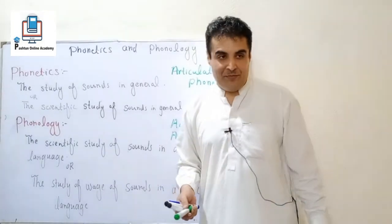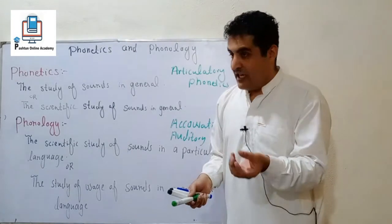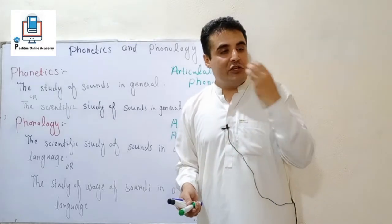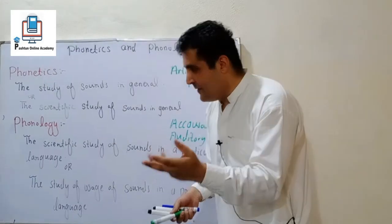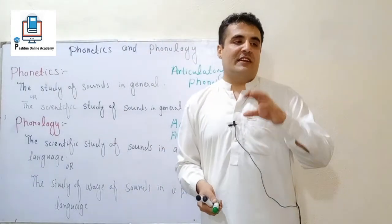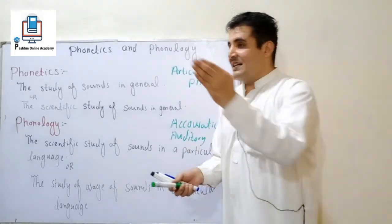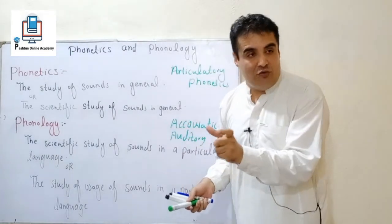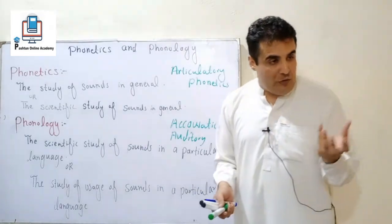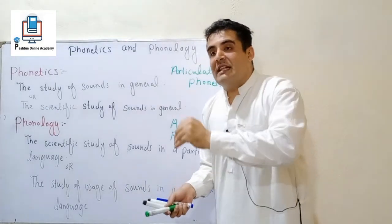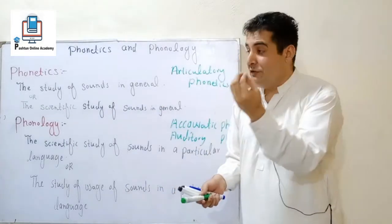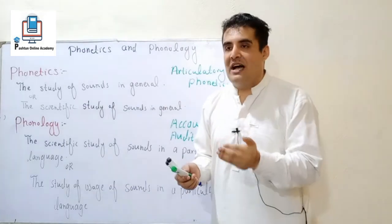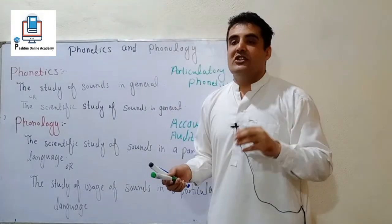The lungs produce the air, and at the vocal cords each sound has a different vibration and frequency. As the articulators change shape, different sounds are formed. Acoustic phonetics studies the transmission of sounds — for example, amplitude, frequency, wavelength, trough and crest — the physical properties of sound waves as they travel.